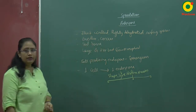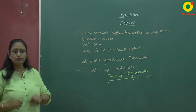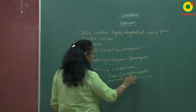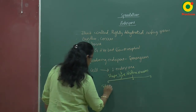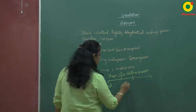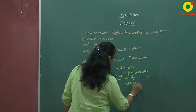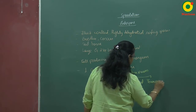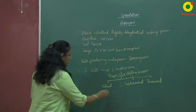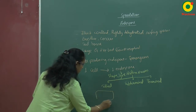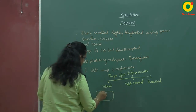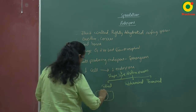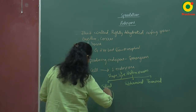The position of the endospore in the cell can vary. Sometimes the endospore is present in the center of the cell, sometimes at the sub-terminal region, and sometimes at the terminal region. On the basis of position, endospores are of three types: central, sub-terminal, and terminal. In the central type, the thick-walled spore is present in the center of the cell.